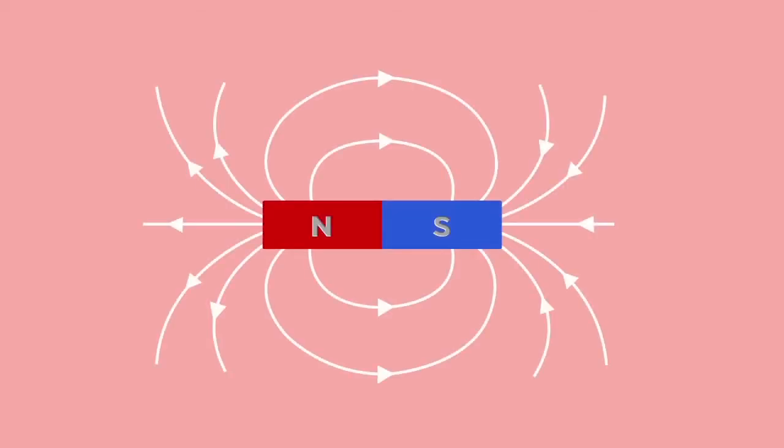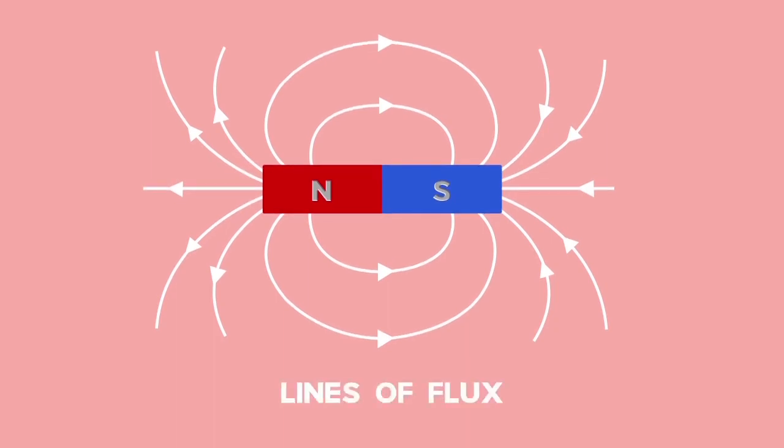When drawing field lines to represent the magnetic field, these lines are called lines of flux.